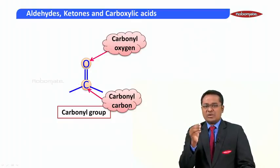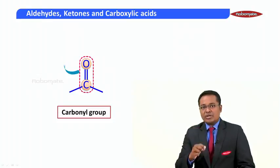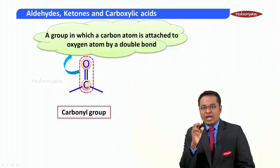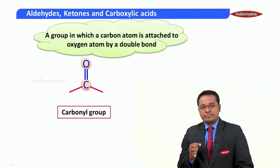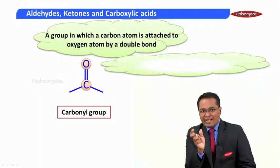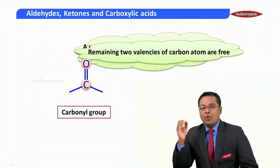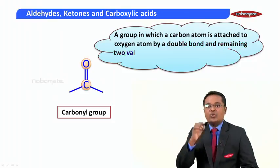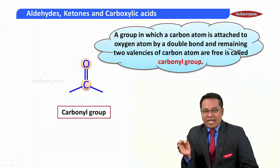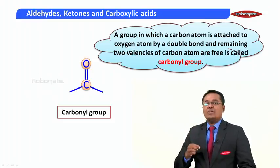Let us now define a carbonyl group. A carbon atom is attached to an oxygen atom by a double bond. Additionally, there are two single bonds attached to that carbon atom, meaning its two remaining valences are free. So, a group in which a carbon atom is attached to oxygen by a double bond and the remaining two valences of the carbon atom are free is known as a carbonyl group.